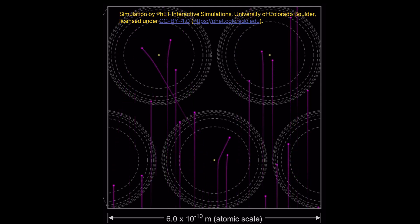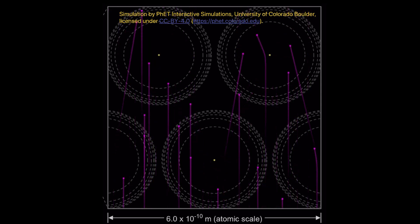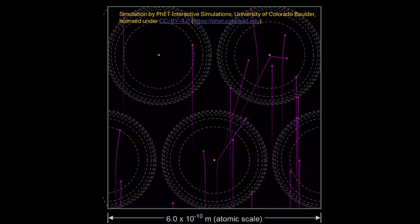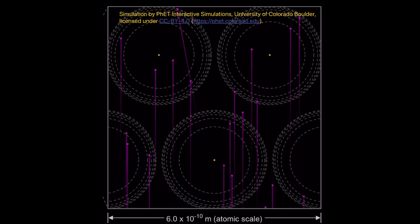You can extend students by discussing how our tissue paper model isn't perfect, for example the dart has to actually hit the tissue paper rather than pass close to it in order to be deflected.